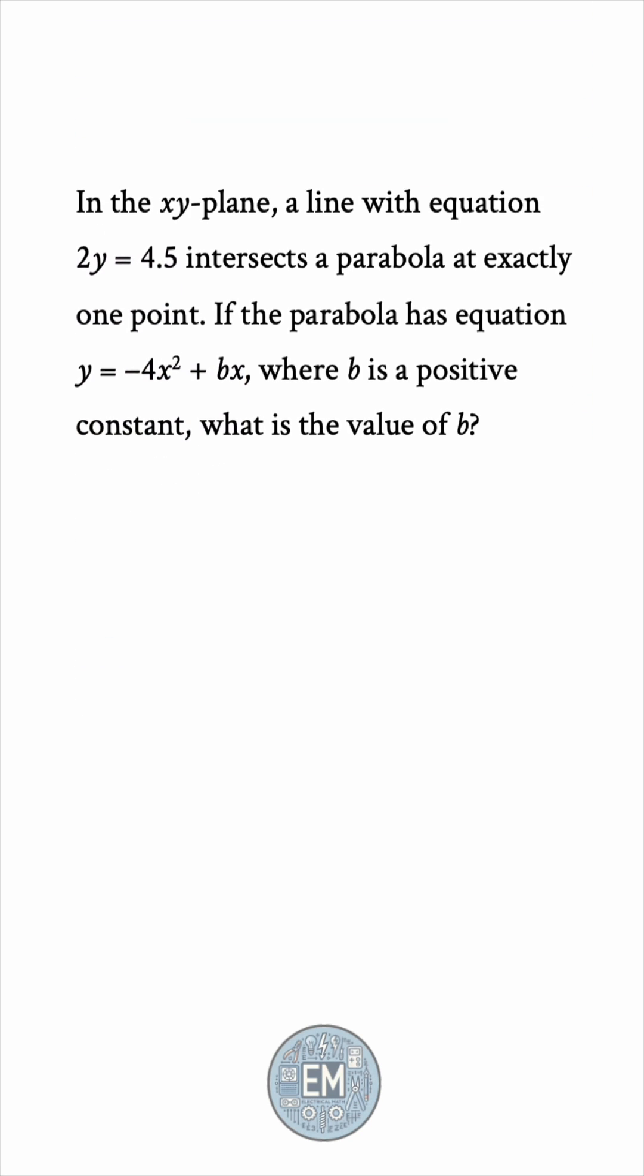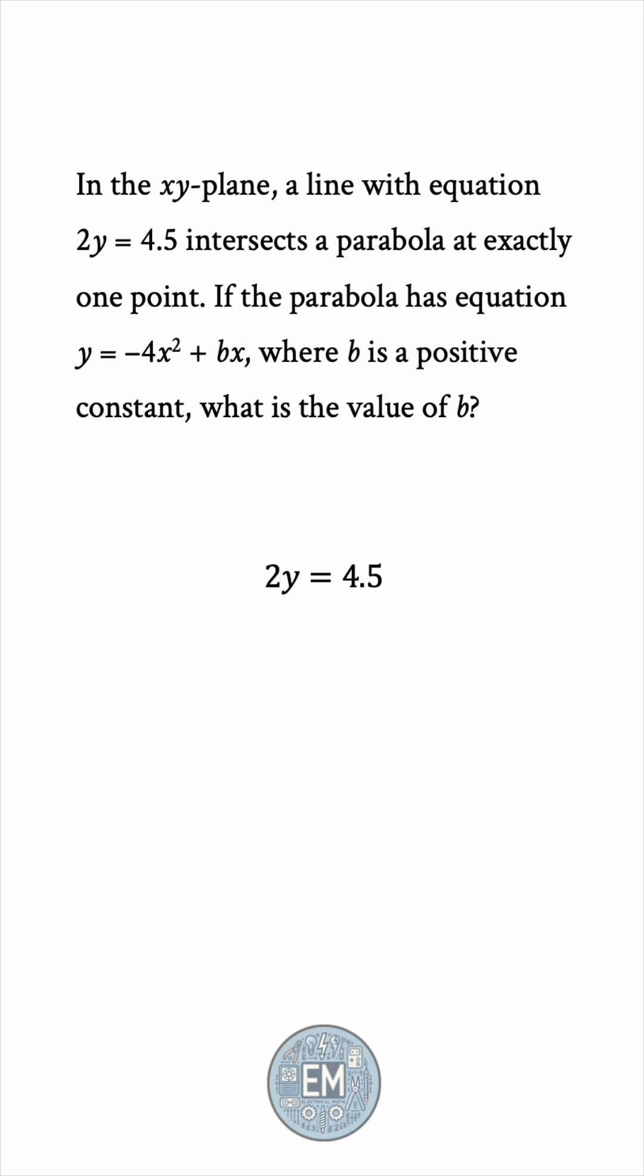We want to find the intersection between the line and the parabola, so we need to equate their equations. Let's divide the first equation by 2 so that it's just y. This gives us 2.25.